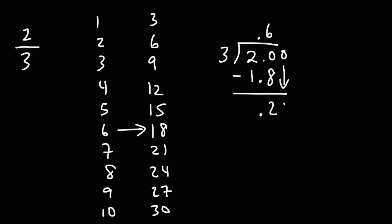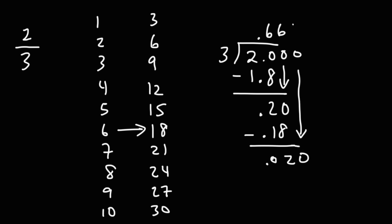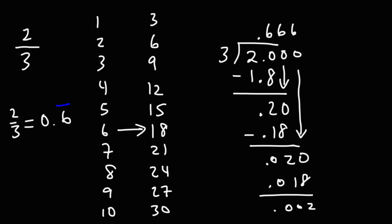We need to add another 0. Notice that we get 20 again. 3 goes into 20 six times, so that will be 3 times 6 is 18, which gives us 2 again. When we bring down a 0, we get 20 again, and 3 goes into 20 six times. This is just going to keep repeating. So when you see this repeating pattern, the answer is going to be 0.66666 going forever. Instead of writing it that way, we can simply write 0.6 repeating — just put a bar over the 6. That's how we convert 2 over 3 into a decimal: it's 0.6 repeating.